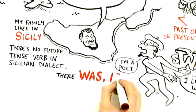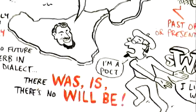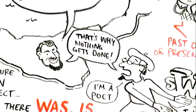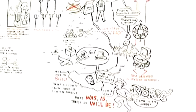And it wasn't until I heard you talk that I realized there's no future tense verb in Sicilian dialect. I said, what do you mean? There was, is, there's no will be. He said, that's why nothing gets done. And I didn't realize it because we never planned.